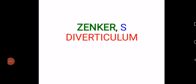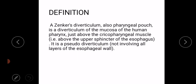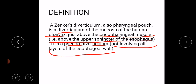Welcome to my channel. In this video I will discuss what is Zenker's diverticulum, also known as pharyngeal pouch. Zenker's diverticulum is a diverticulum of the mucosa of the human pharynx. It occurs just above the cricopharyngeal muscle, that is above the upper sphincter of the esophagus, and it is a pseudodiverticulum, meaning it does not involve all the layers of the esophageal wall.